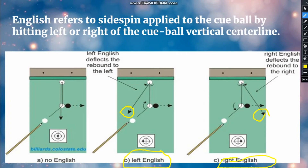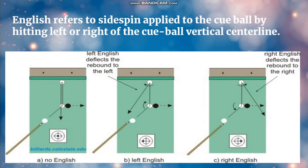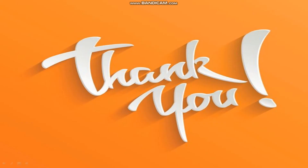If the ball doesn't get a side spin, then it's called no English. Hope you all understood, friends. Thanks for watching.